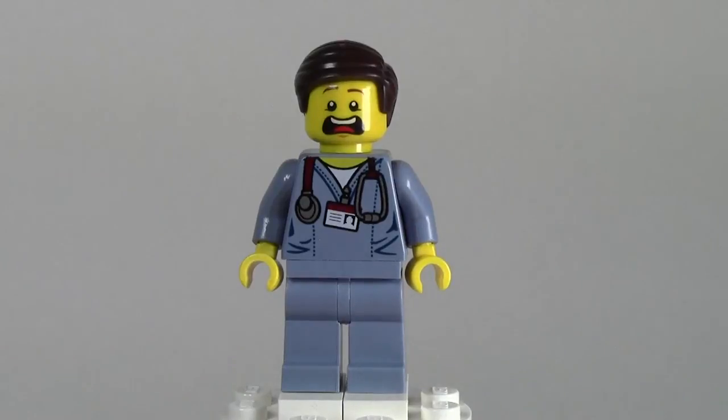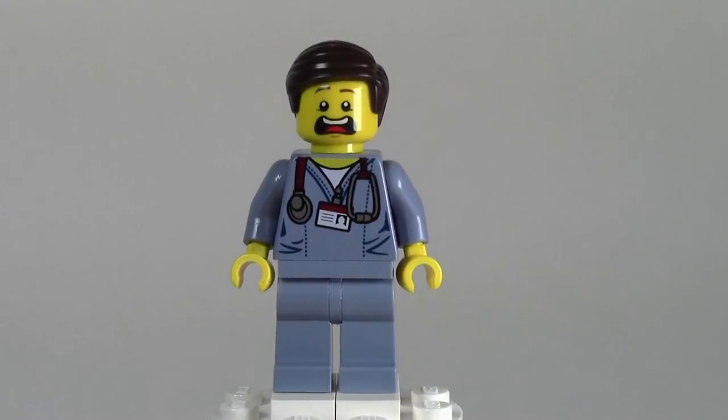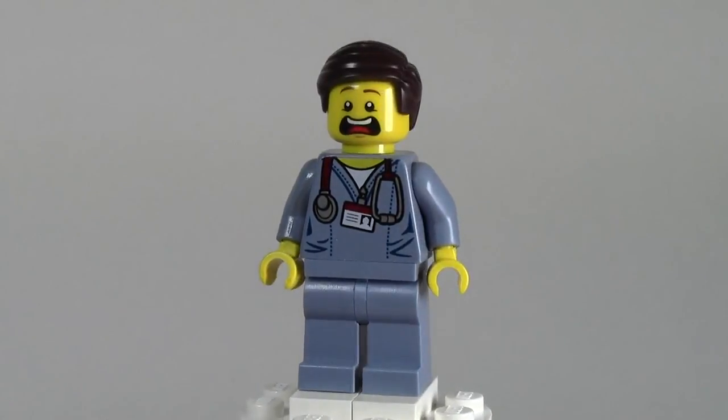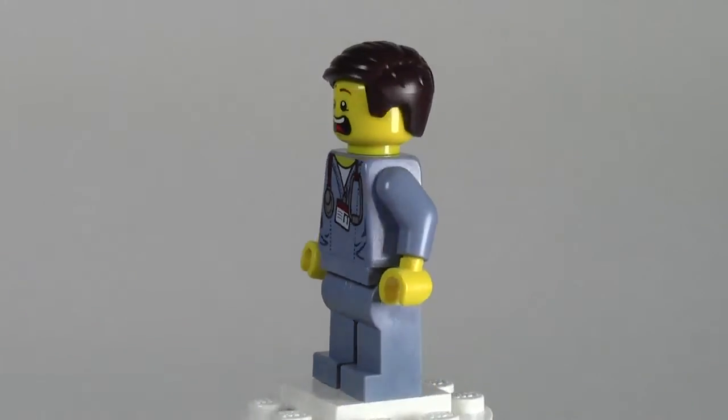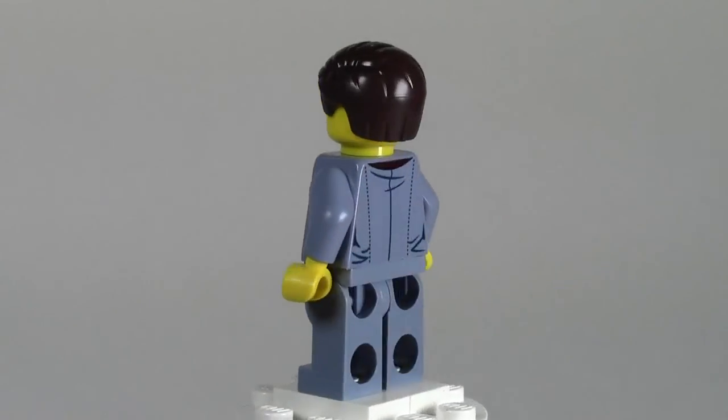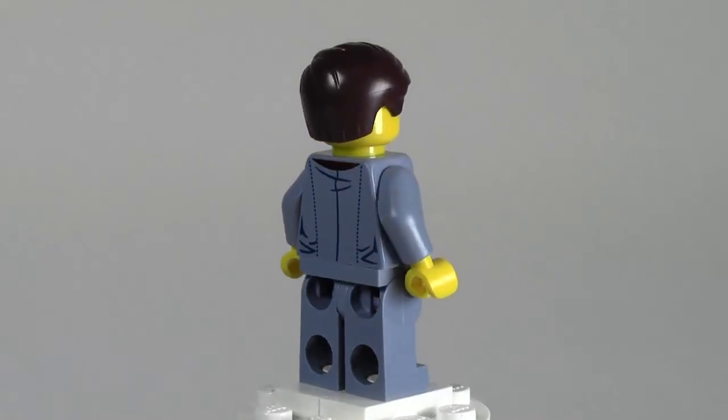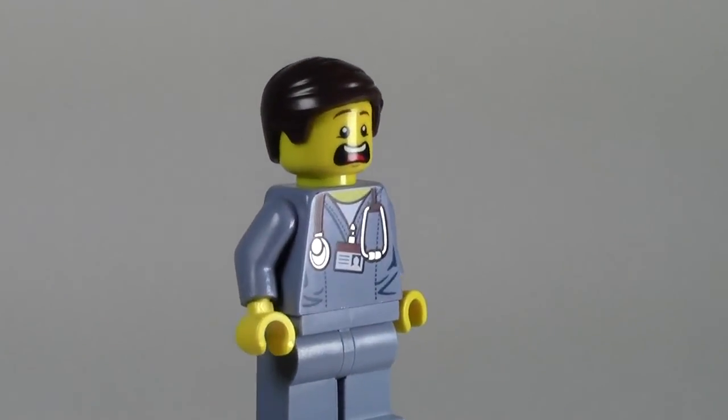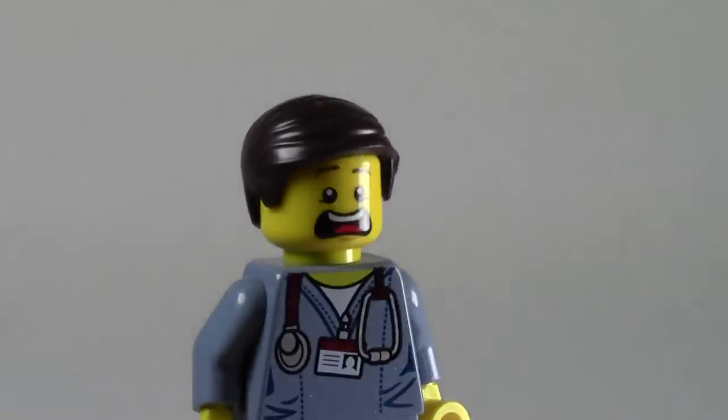The next minifigure here is Dr. McScrubs, which is a very ironic name. He's wearing the doctor's uniform with a name badge and some wrinkles in his lab coat. Goes all the way down, and he does have back printing continuing on his lab coat. Very cool hair, actually. I've only seen this piece in black before, so very cool.